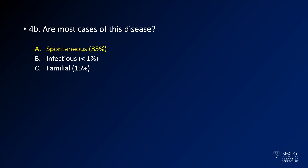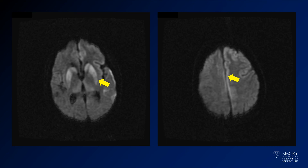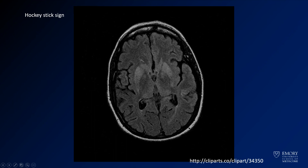Here you see the diffusion-weighted images from our case. What you have is this abnormality in the putamen, the caudate, and then the medial and dorsal thalami here. And then if you look a little higher, what you see is this abnormal diffusion hyper-intensity along the cortex, which can also be bright on T2 or FLAIR.